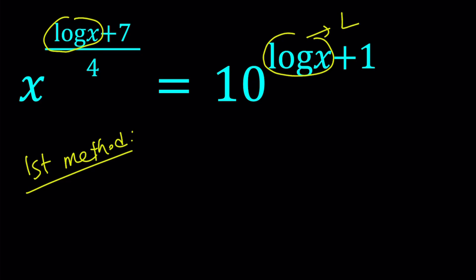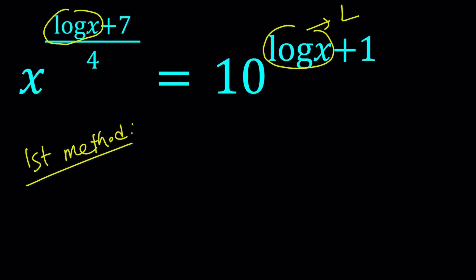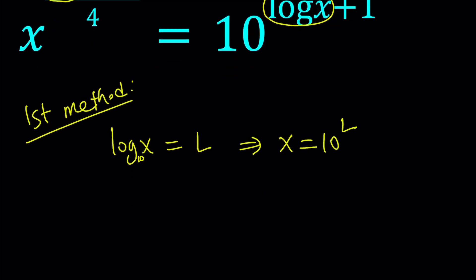Let's write our expression. This is a consequence if log x equals uppercase L. Since the base is 10, from here we can write x equals 10 to the power L. Now let's replace x with 10 to the power L, and that is raised to the power L plus 7 over 4, and that equals 10 to the power L plus 1.